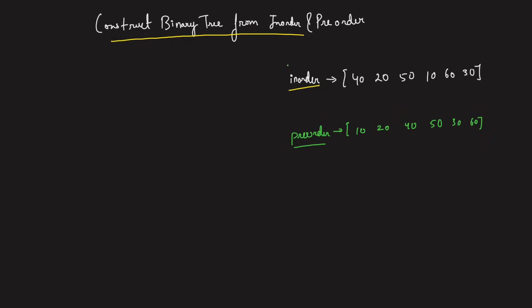In-order traversal is: left, root, right. Pre-order traversal is: root, left, right. Everyone knows this.